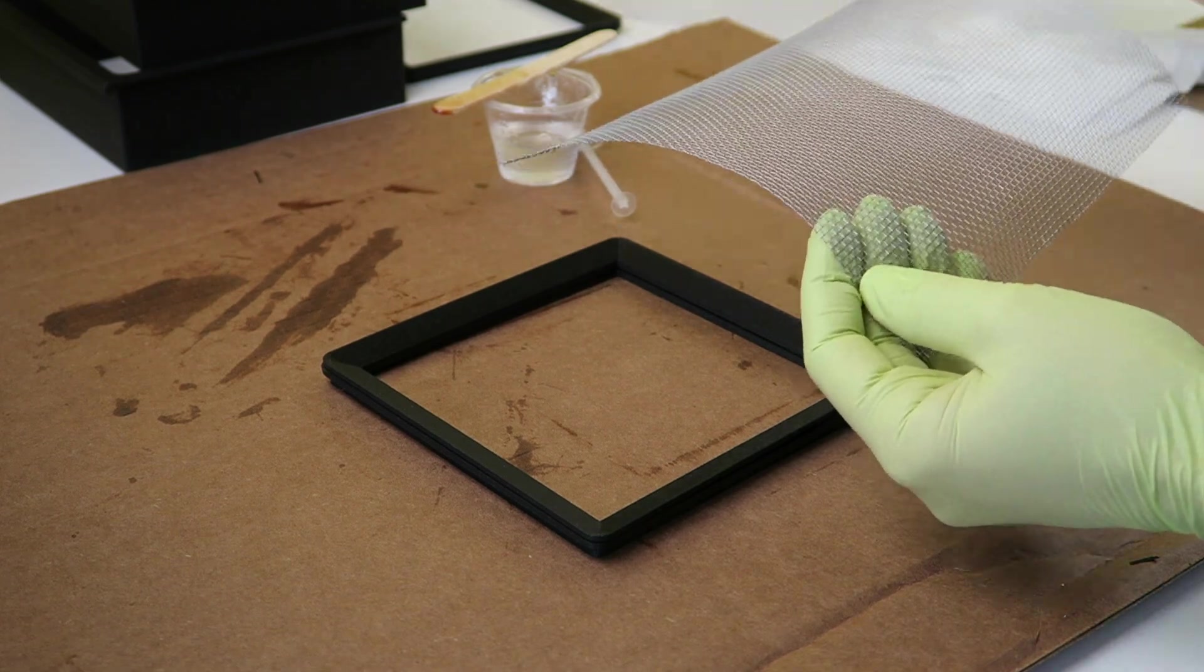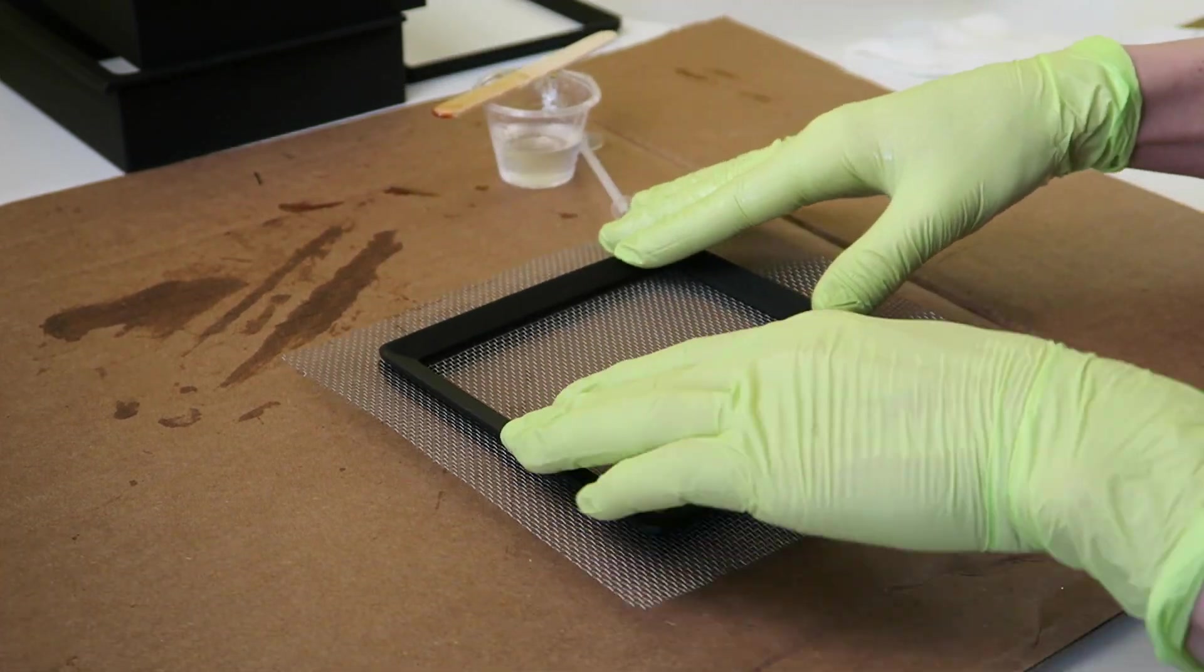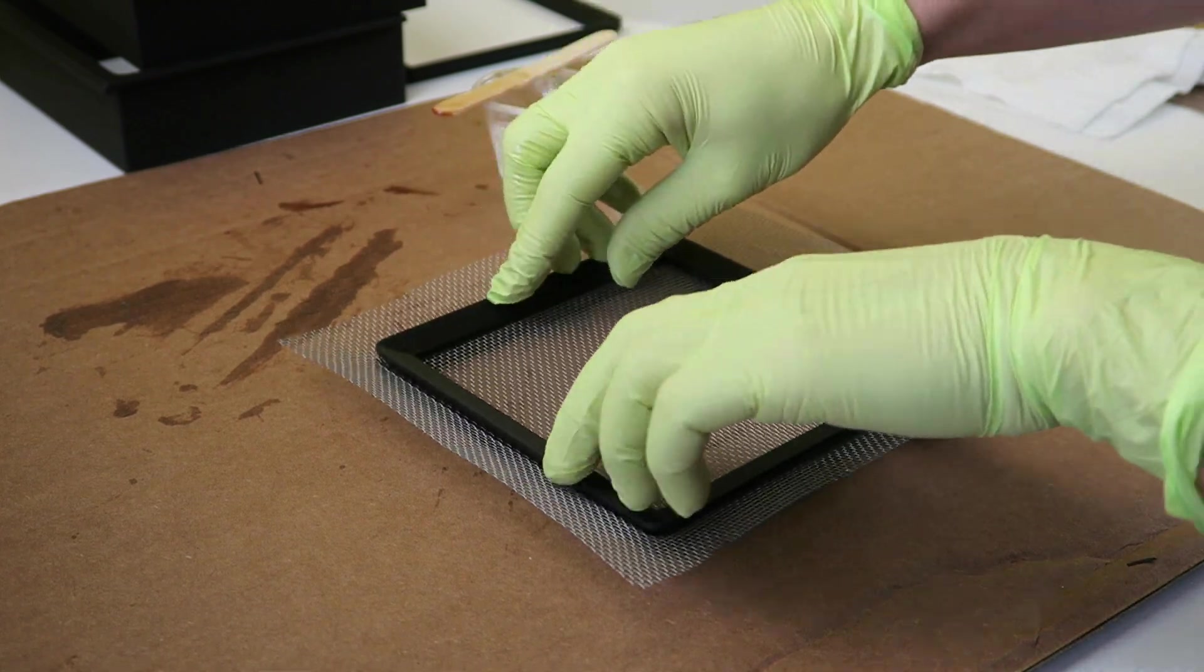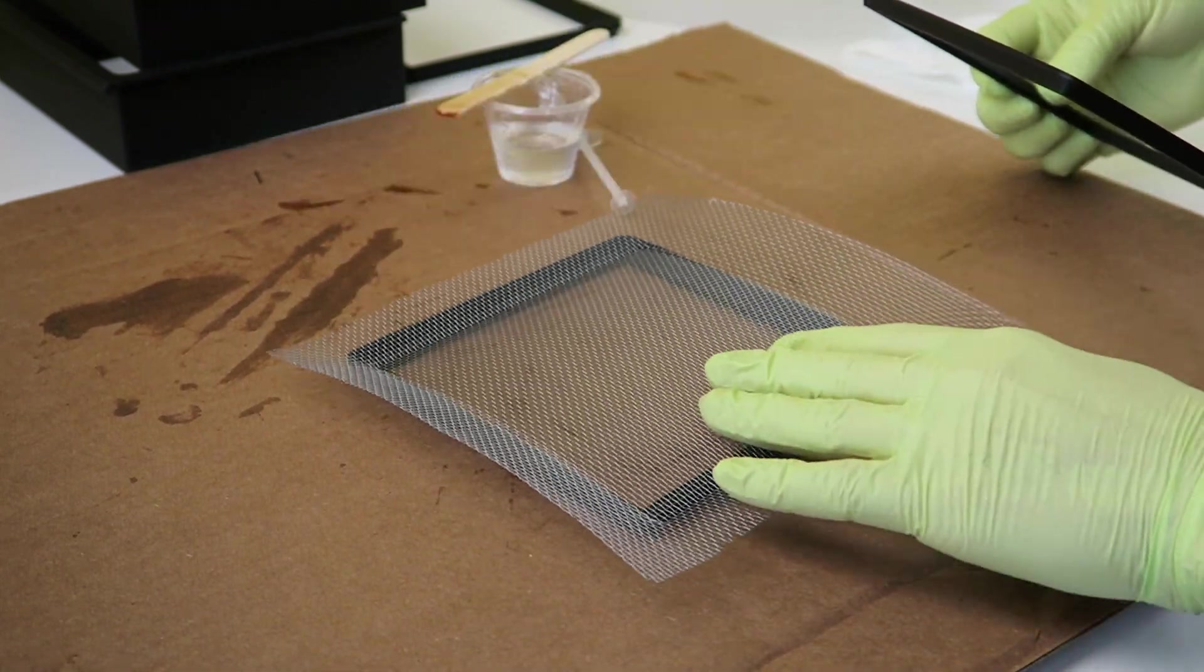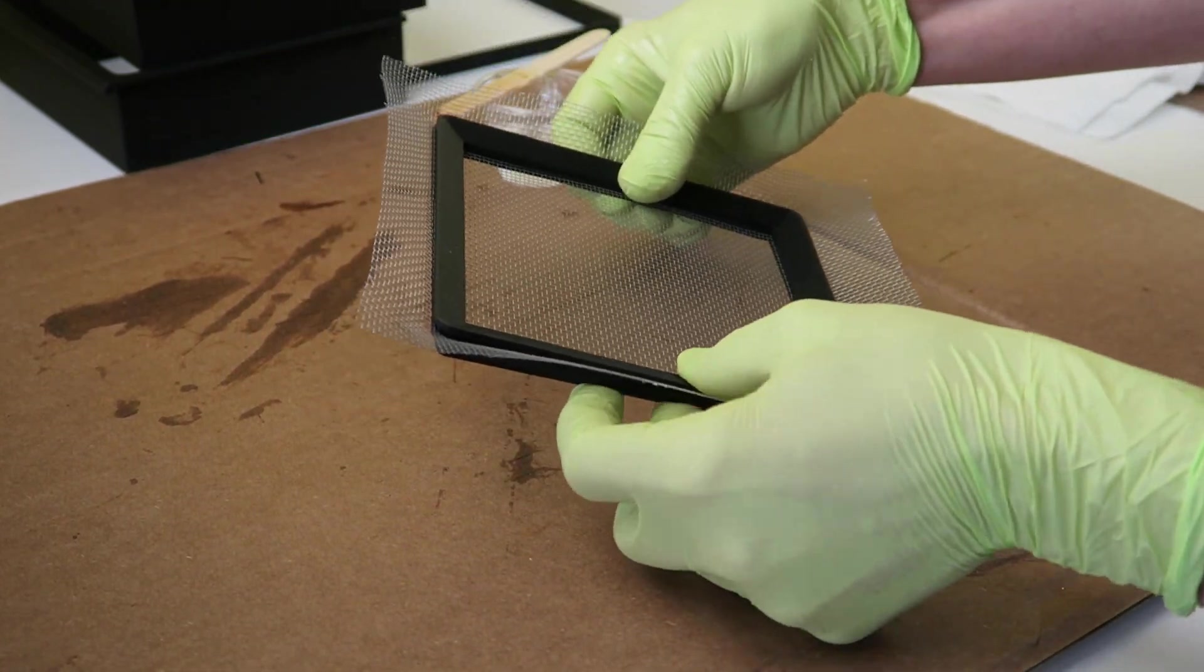For the large trays, cut pieces of aluminum window screen to about an inch wider on each side than the frames. Add glue or epoxy to the inside surfaces of the 3D printed frames and sandwich the screen between them with clamps to keep it compressed.